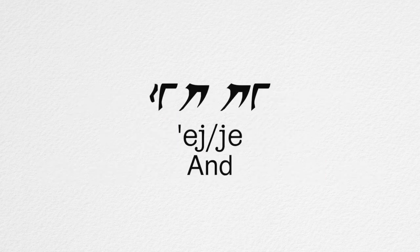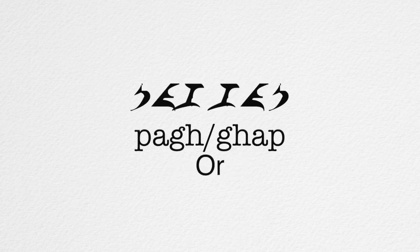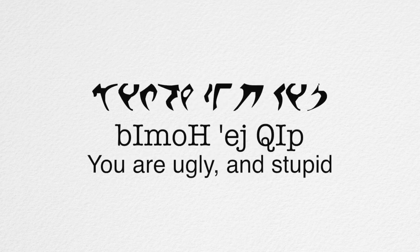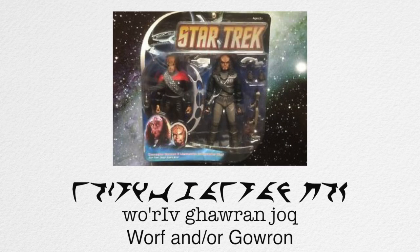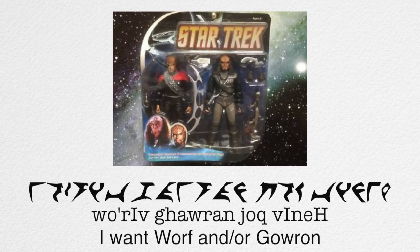Conjunctions are also really interesting in Klingon — things like 'and' and 'or' — since they don't work too differently from English when joining sentences. For example, 'B'khokh-Ejt-Qip-Ju-Blet.' But it works a little differently when joining nouns, like in lists, as in 'W'h-Riv-Gharo-Jokh-Vin-Ekh,' as the conjunction comes after all the listed nouns — not necessarily the last word in the sentence, but after the list has been completed.